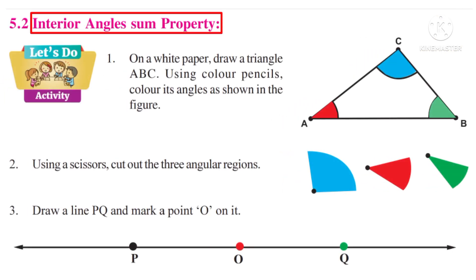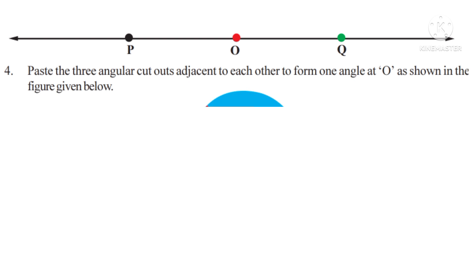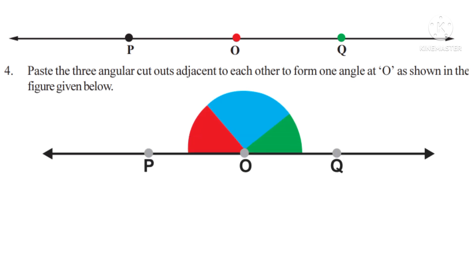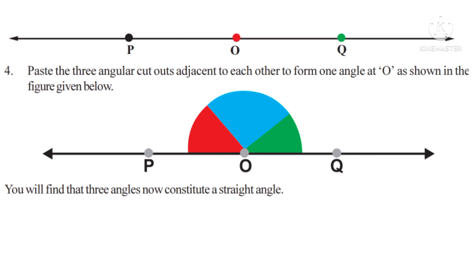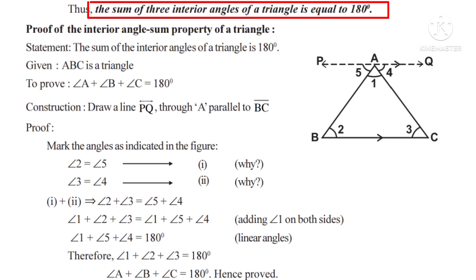Number 1: On a white paper, draw a triangle ABC. Using color pencils, color its angles as shown in the figure. Then, using scissors, cut out the three angular regions. Now, draw a line PQ and mark a point O on it. Paste the three angular cutouts adjacent to each other to form one angle at O as shown in the figure. You will find that three angles now constitute a straight angle. Thus, the sum of three interior angles of a triangle is equal to 180 degrees.